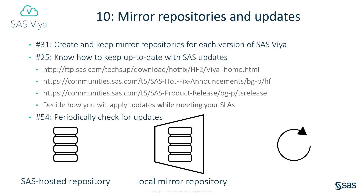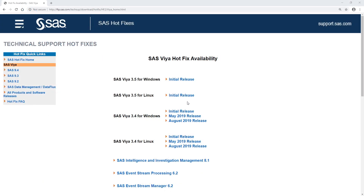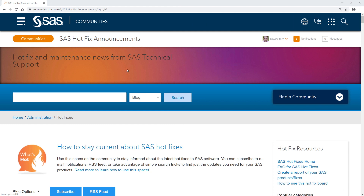Number 10: Mirror repositories and updates. You can deploy SAS Viya using a SAS-hosted repository, but we update our repository frequently and it's better to create and keep a mirror repository for each version of SAS Viya you currently have deployed. By doing that, you can repair or expand your deployment with the same version of the SAS Viya software that your other hosts are running. Task number 31 in the checklist paper has more detail. Know how to keep up to date with SAS updates as described in task number 25. The URLs on screen are good places to find out what updates are available for your version of SAS Viya. And you can subscribe to be notified when new updates are released.